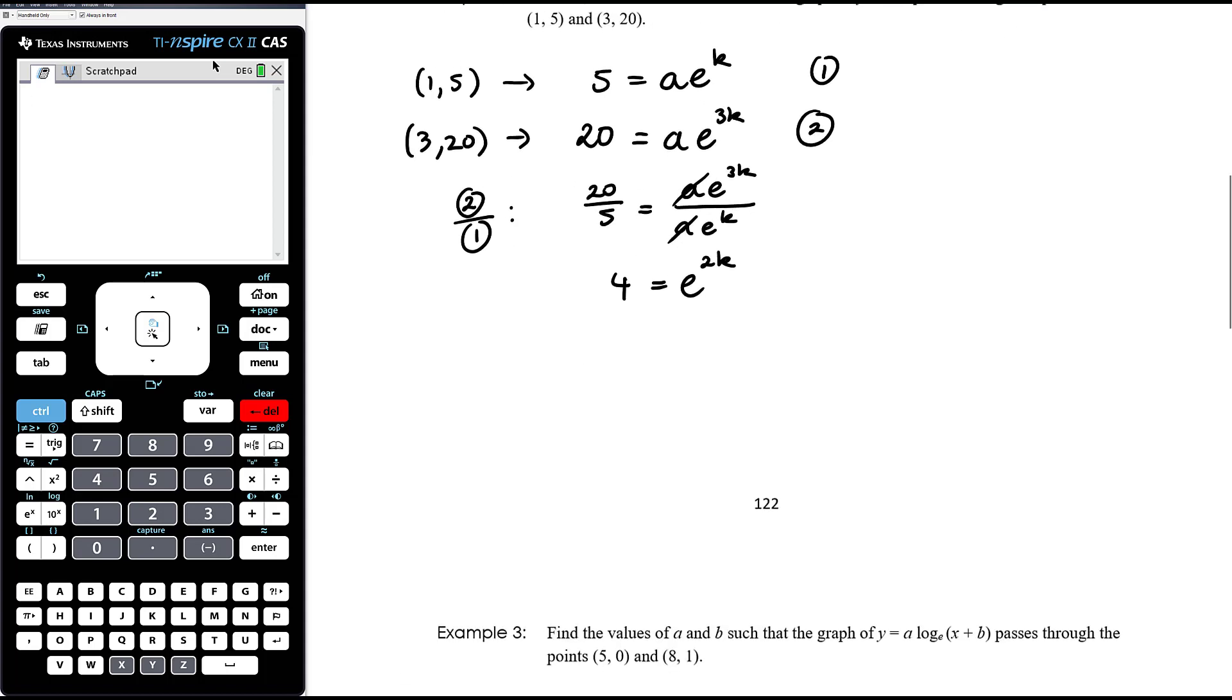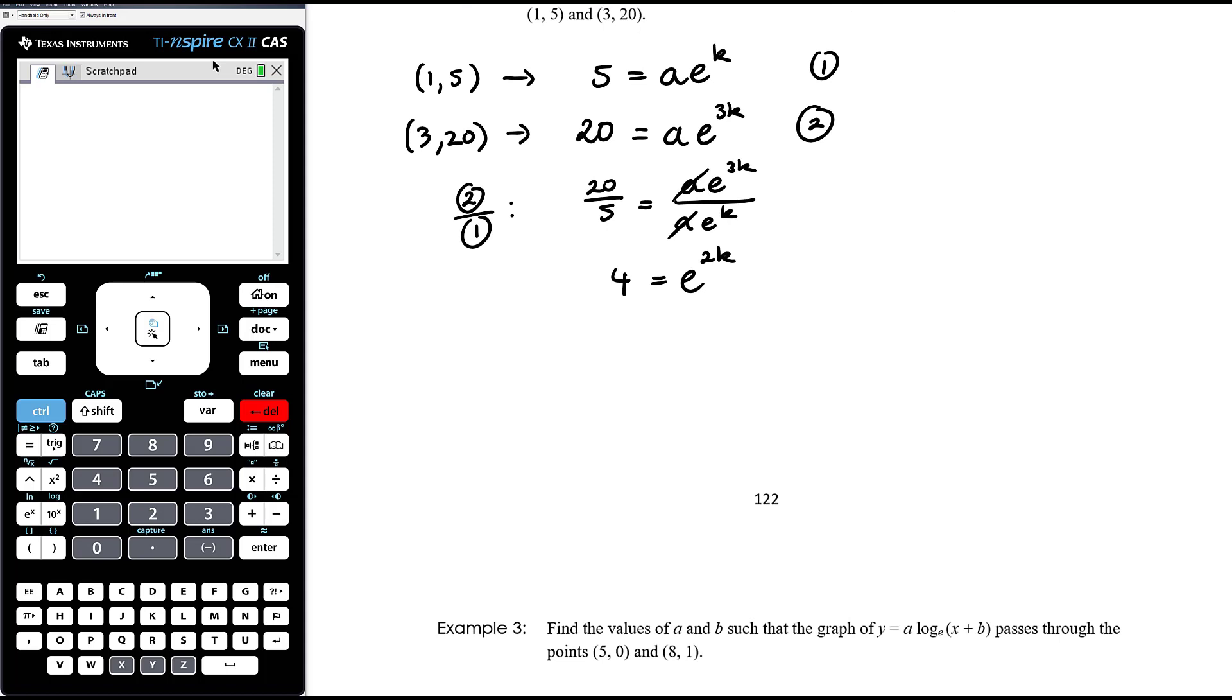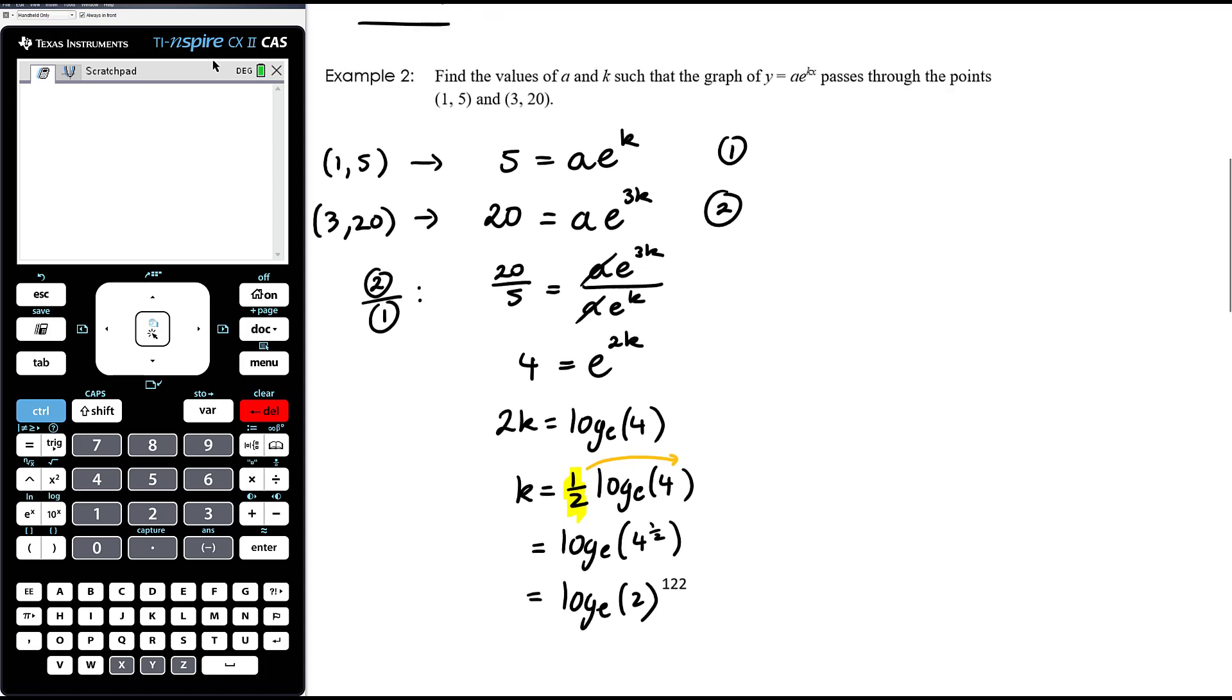So regardless of how you do it, you're going to get to this point. And then we can solve this by converting to a log equation. So 2k is equal to log base e of 4. And so k is going to be half times log base e of 4. And you can stop there, but it's not really very nicely simplified because we can take that half and stick it up into the power. And in this instance, that's a good thing to do because 4 to the power of a half is the square root of 4. And so we have log e of 2 for k.